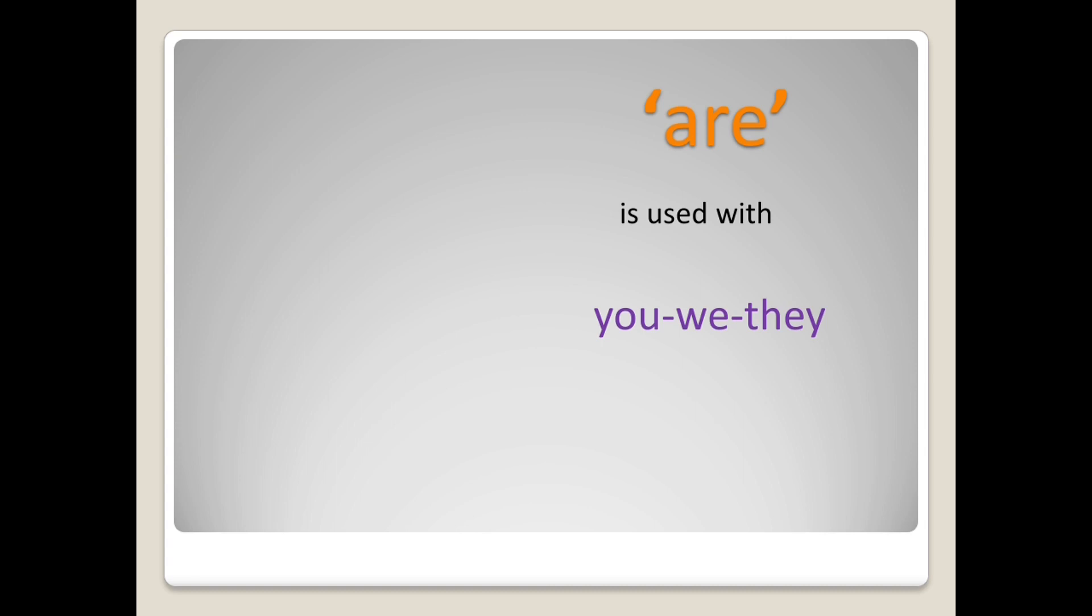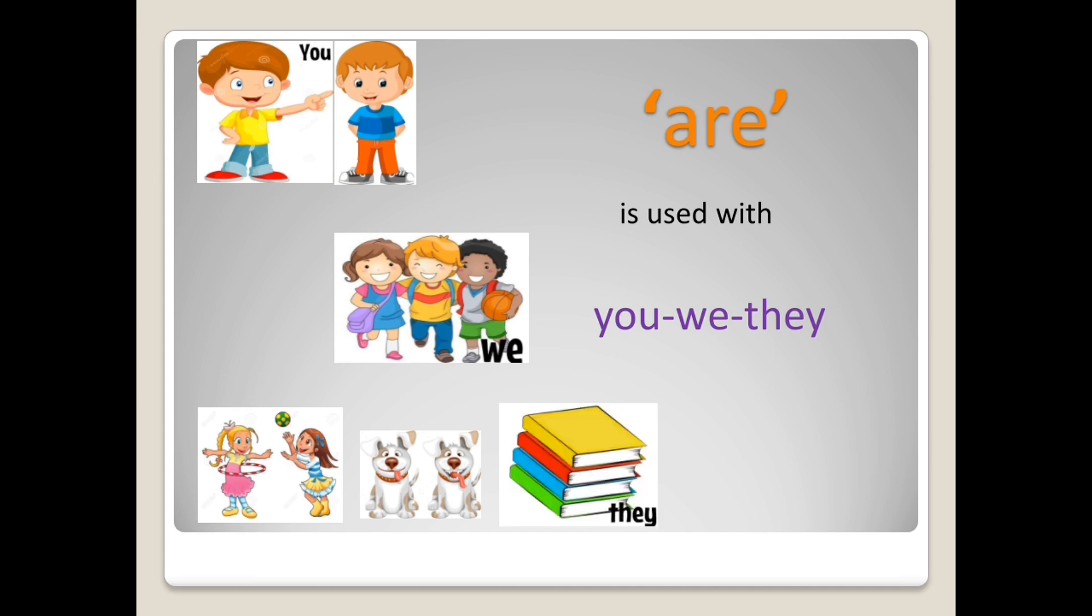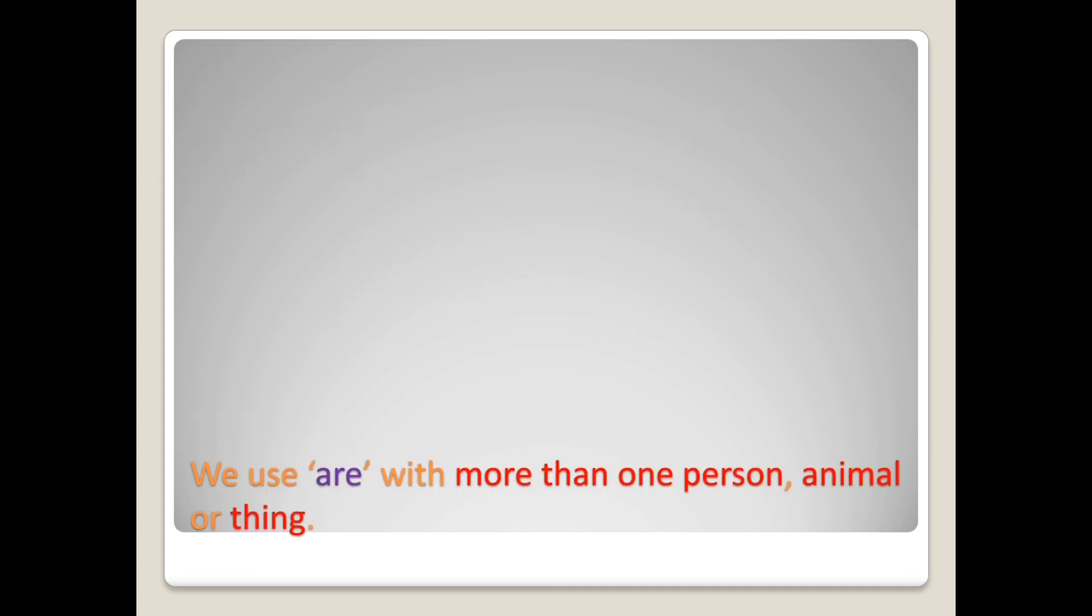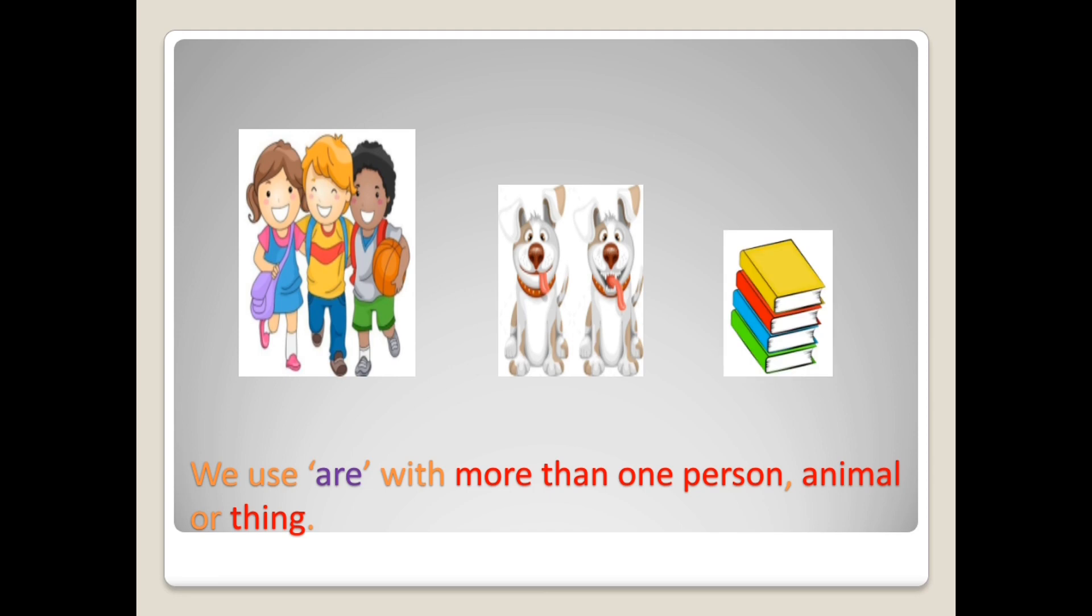Are. Are is used with you, we, and they. We use are with more than one person, animal, or thing. Let us look at some examples.